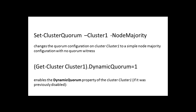We are also able to configure the cluster quorum using PowerShell. The first example — Set-ClusterQuorum Cluster1 NodeMajority — will change the quorum configuration on cluster 1 to a simple node majority configuration with no quorum witness. The second example — Get-Cluster Cluster1 DynamicQuorum equals 1 — will enable the dynamic quorum property of cluster 1 if it was previously disabled. In this session, we took a look at the quorum configuration for a failover cluster. This is the end of our session — thank you for listening.